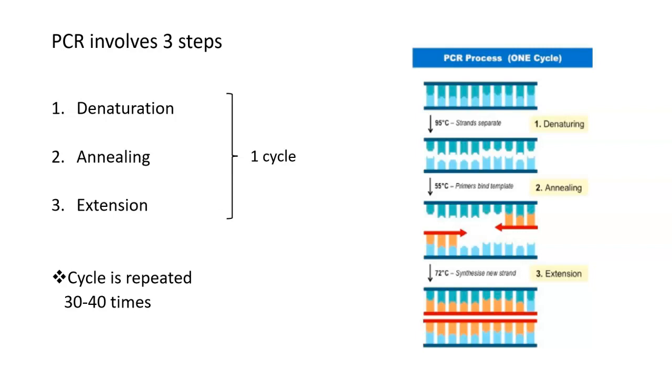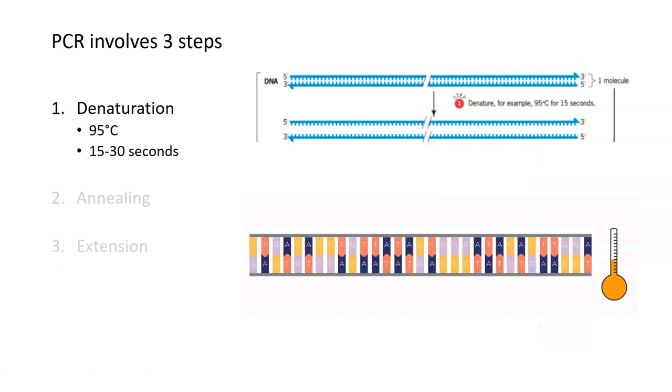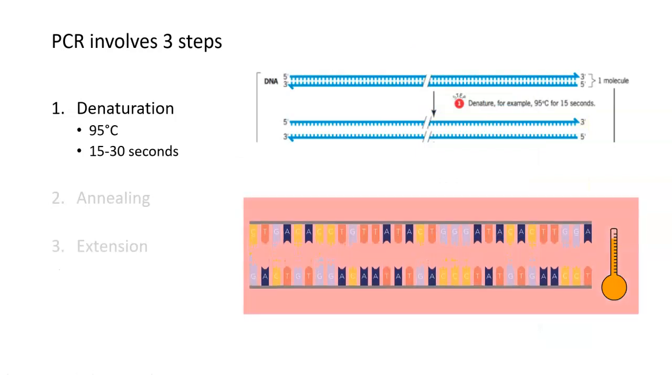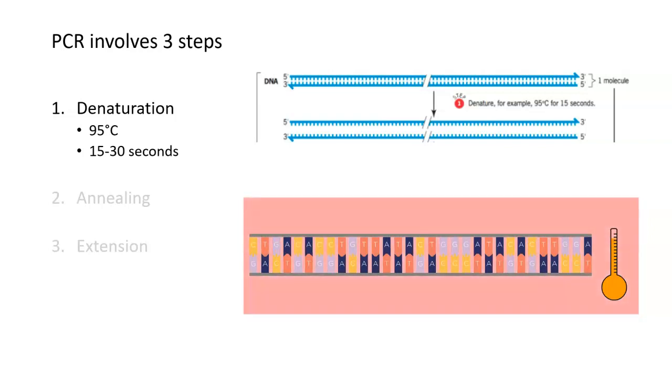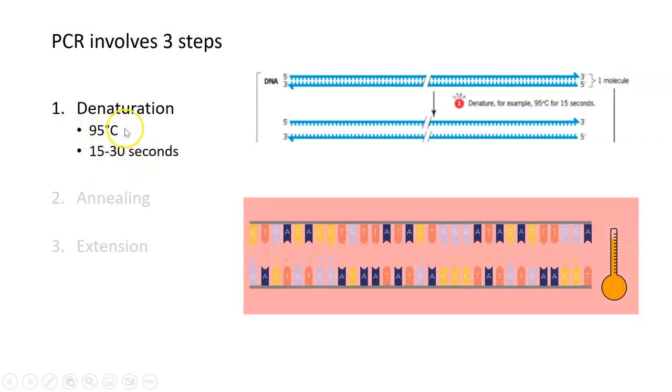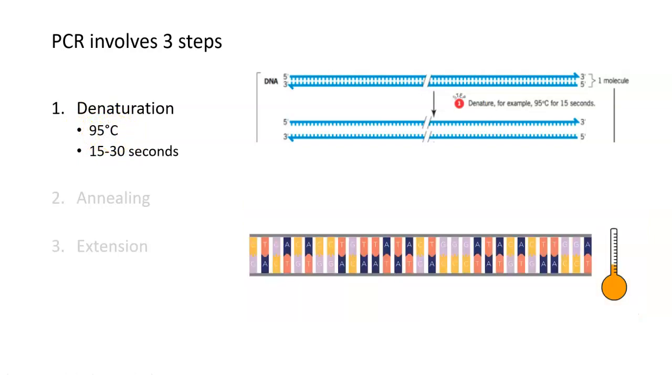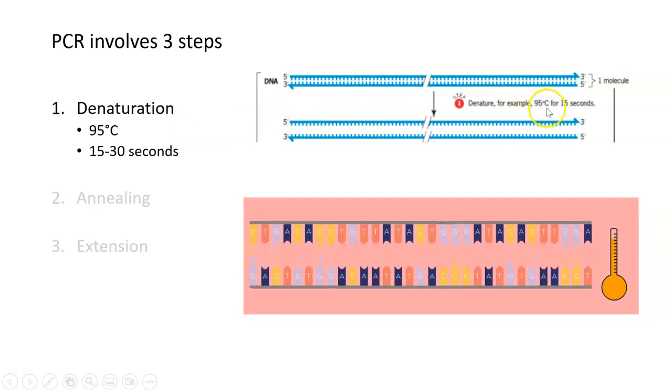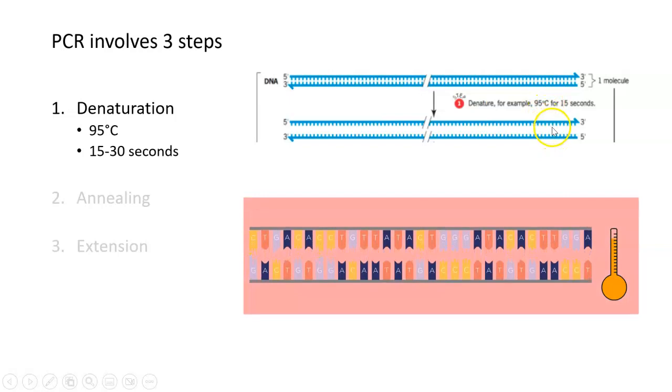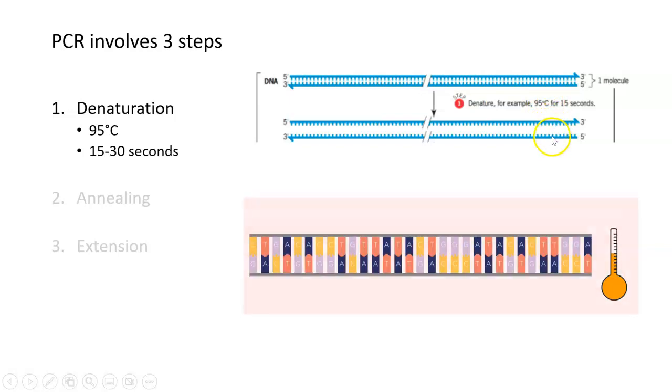In that repetition of 30 to 40 cycles, the DNA that you're interested in can become amplified from one single piece to billions of pieces. I'm going to talk about what happens in each of these three steps of the cycle. The first step in a PCR is denaturation. Denaturation happens for about 15 to 30 seconds in the machine and occurs at about 95 degrees Celsius.